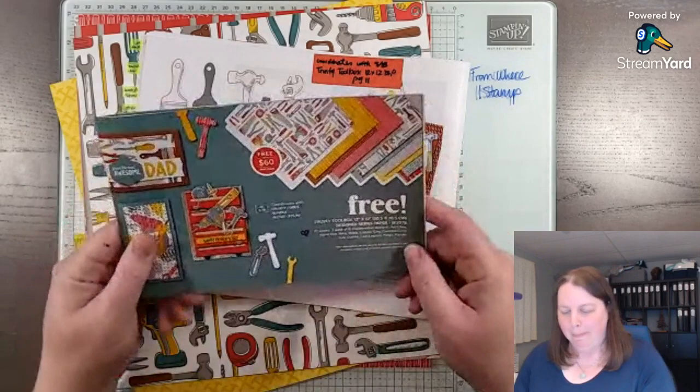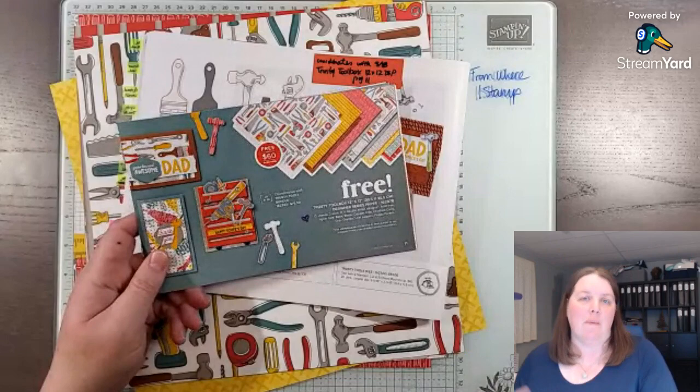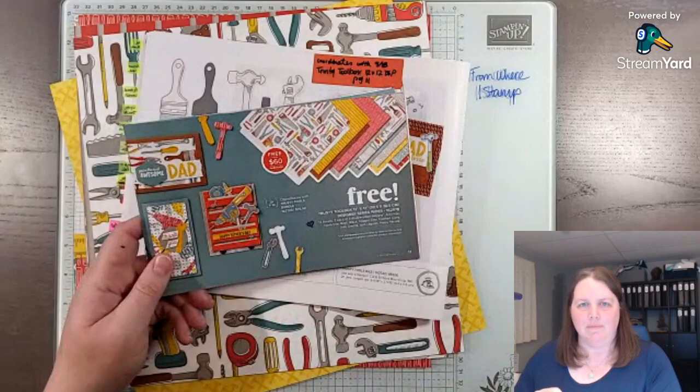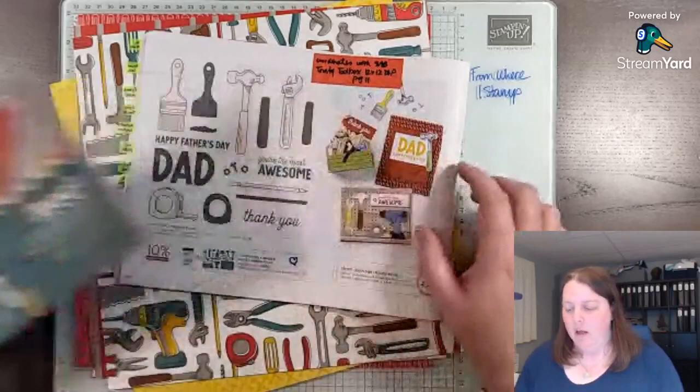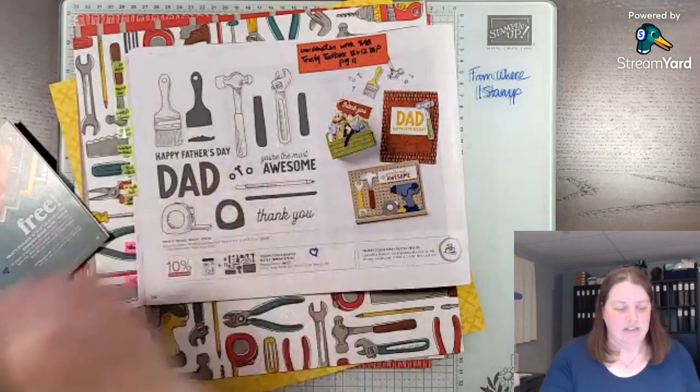So make sure that if you want to be crafty to either come back to watch this video when you have a bunch of photos, 11, 10, 12, something that you can cut down. The thinner, if you can make them, the profile smaller, I'll show you what I did. But this trusty toolbox designer series paper is free with a $60 order and the coordinating trusty tools bundle, which is this stamp set right here with these dies here.